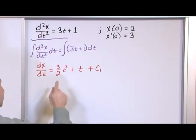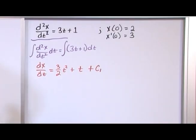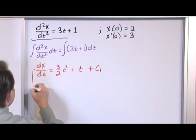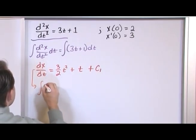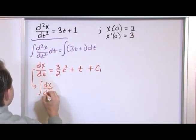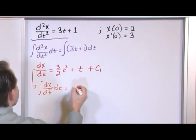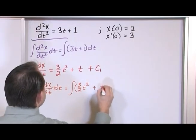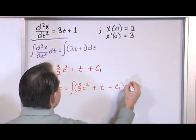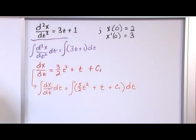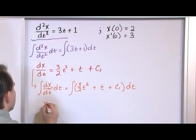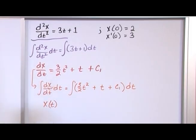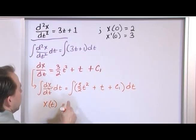So we got 3 halves t squared plus t plus c₁. That's a good first start. Now let's take this and integrate it again because we need to isolate the variable. So let's integrate dx with respect to time, and on the right-hand side we're integrating 3 halves t squared plus t plus c₁ dt — just integrating again, like we did for F equals ma. On the left-hand side we get back our function x, a function of time.